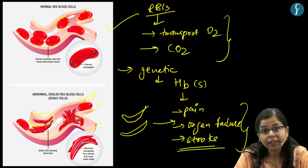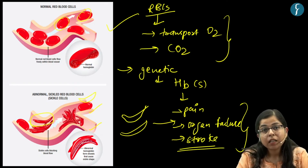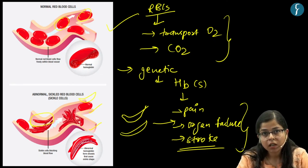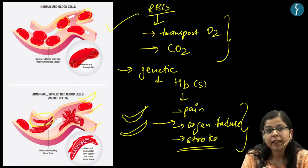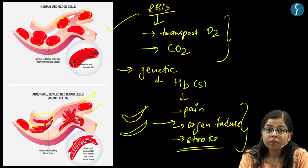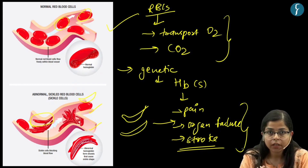You would be surprised that in India, the population records around 30,000 to 40,000 new cases of sickle cell anemia every year. India has the second highest burden of sickle cell anemia in the world, and the prevalence of this disease is mostly found in the tribal belts of the country.